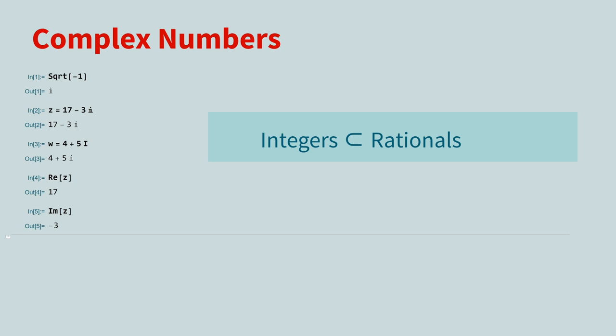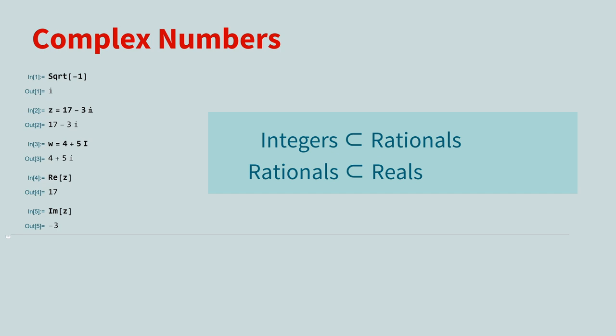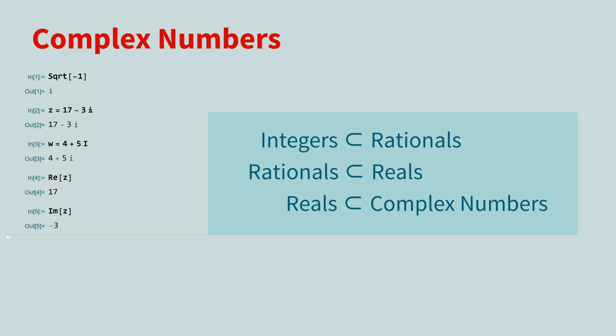We've seen that integers are a subset of the rational numbers, and the rationals are a subset of the reals. Well, the real numbers are a subset of the complex numbers. This is because any real number is just a complex number with an imaginary part of zero.